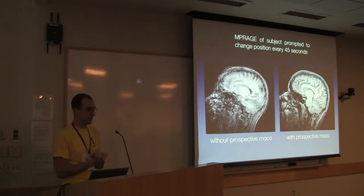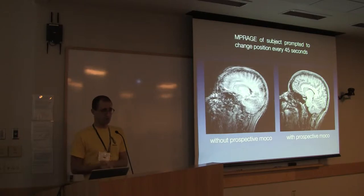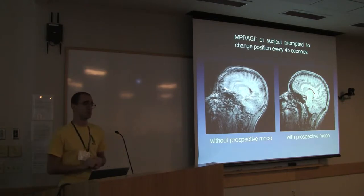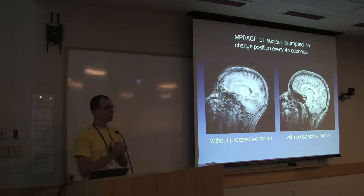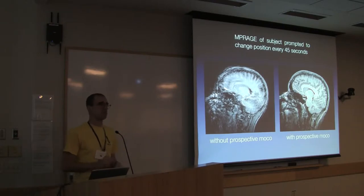This is an MP-RAGE of a healthy normal subject who was asked to change position every 45 seconds during a six-ish minute scan. This subject did not thrash around in there. These were relatively small motions - rotations of less than eight degrees, translations smaller than 20 millimeters, two centimeters of motion. If you just acquired the standard MP-RAGE you would get the image on the left. Obviously that is not the image you want. Using our prospective motion correction system, tracking the same subject, we get the image on the right. These were two separate scans but the subject was asked to repeat the same motions. This is a relatively obvious example of why prospective motion correction techniques are important.